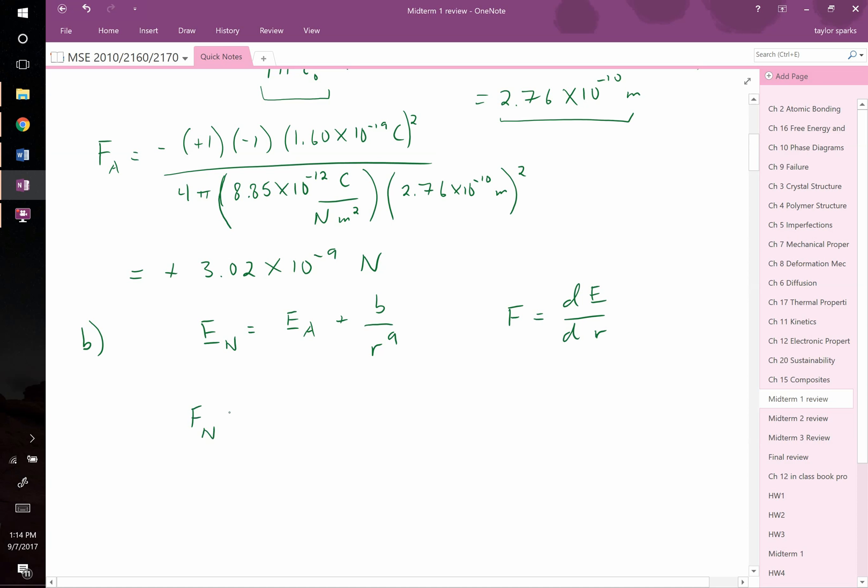We can write that the net force is equal to dEa dr, and then this will become minus 9 times B over R to the 10th.